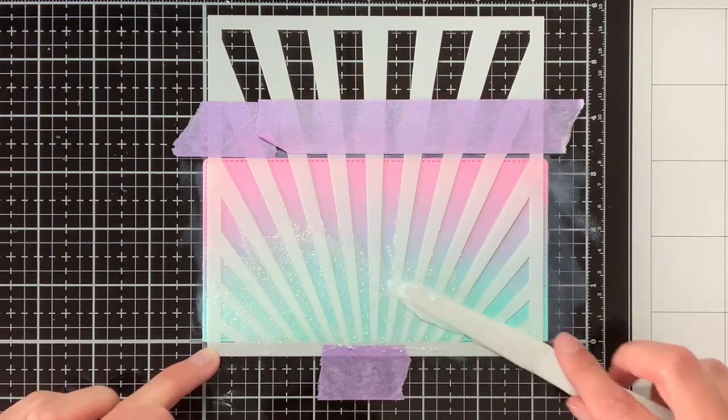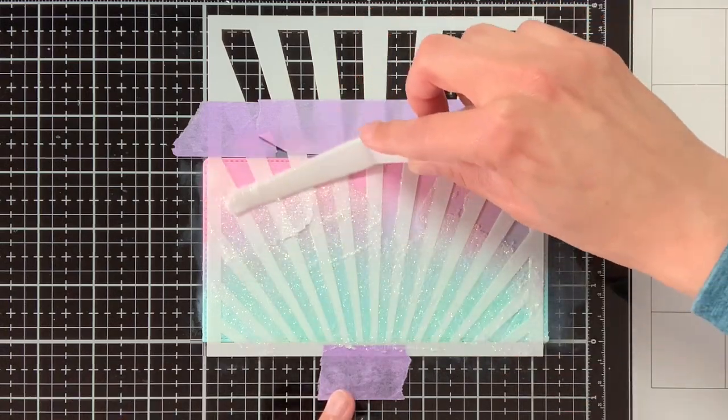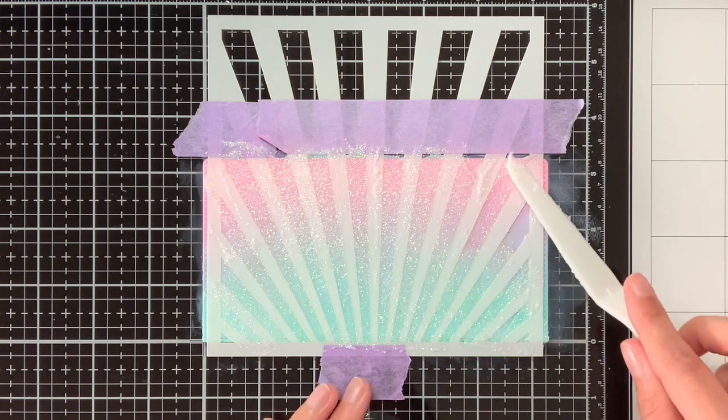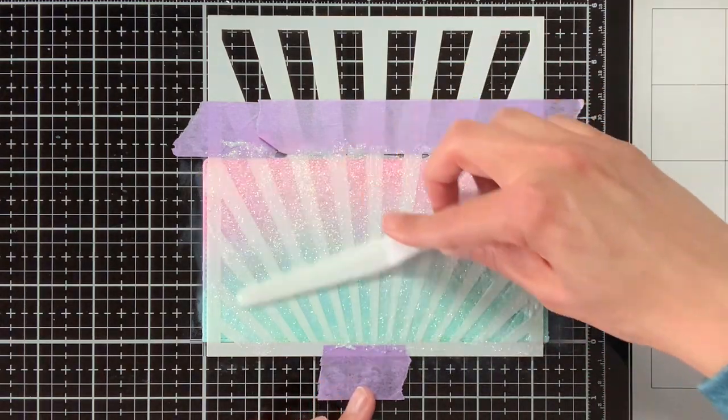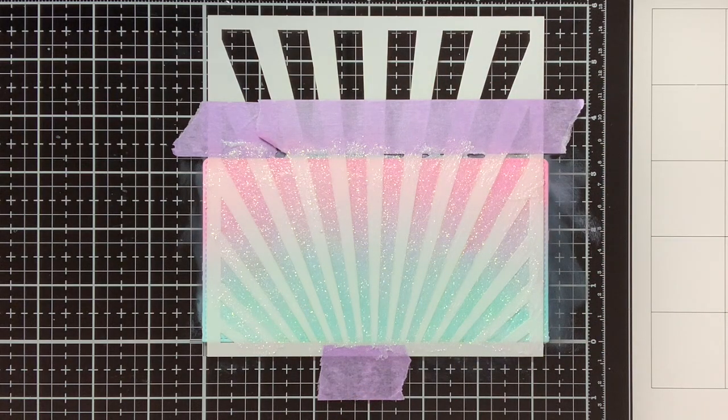With a spatula I am applying the paste to the background and I am making sure that I am moving in the same direction as those rays because I do not want those rays to move and that you then get the glimmer paste underneath the stencil, so I am being quite careful with applying the paste.